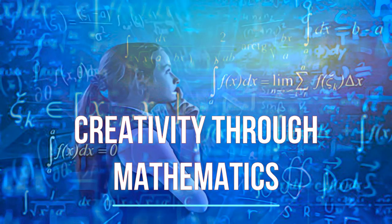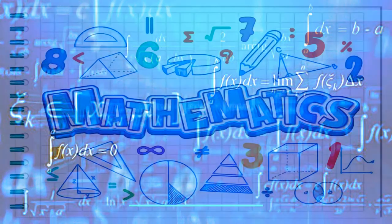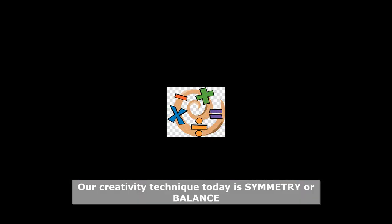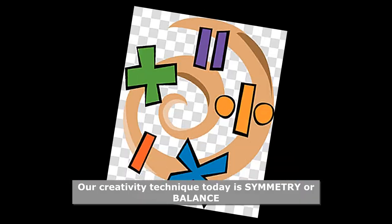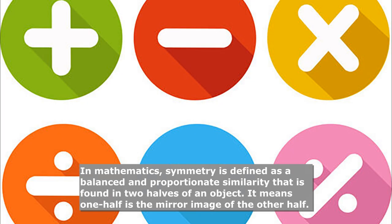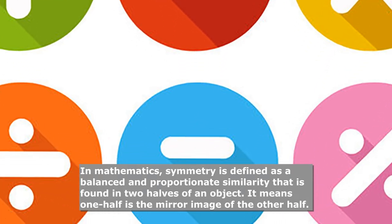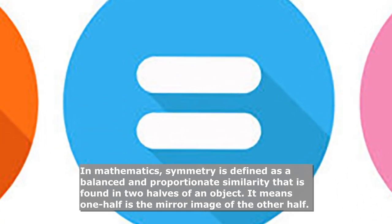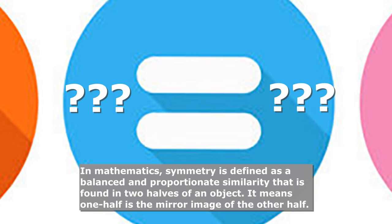Creativity through mathematics. Our creativity technique today is symmetry or balance. In mathematics, symmetry is defined as a balanced and proportionate similarity that is found in two halves of an object. It means one half is the mirror image of the other half.